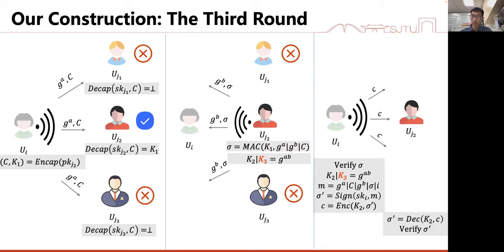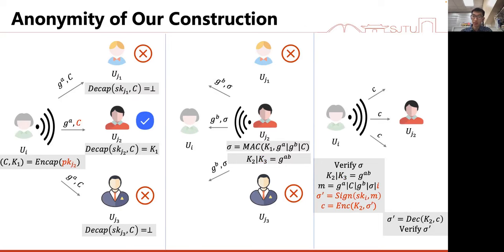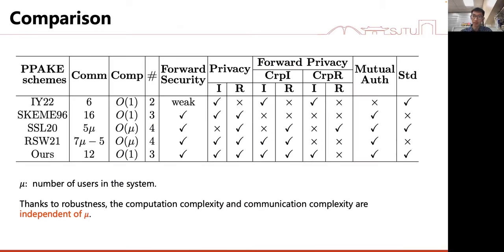In the third round, user UI computes the same Diffie-Hellman key and uses K2 to encrypt its signature. Finally, they share the same session key K3. The initiator's identity is only contained in the third-round message, which is encrypted by the Diffie-Hellman key, so it is protected well. The responder's identity is only contained in the first-round message. Due to the anonymity of CAM, the adversary cannot know which public key was used to encrypt ciphertext C.